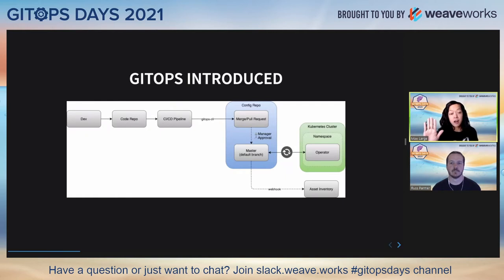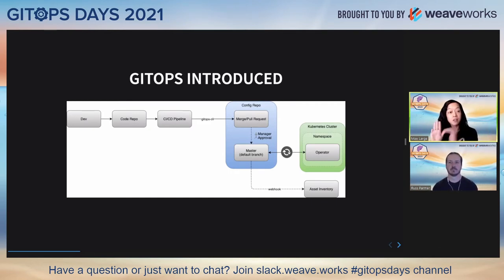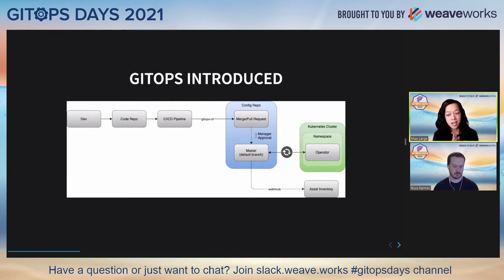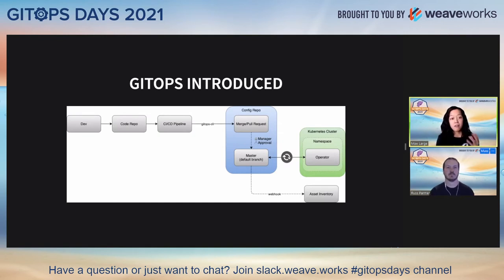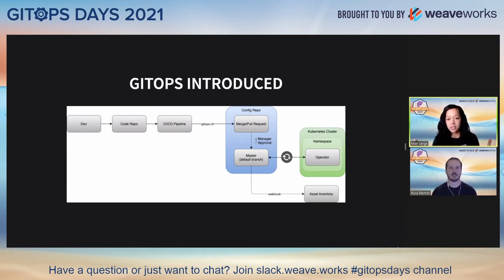The config repo is stood up through automation thanks to Terraform and reinforced again through automation via Terraform. Once you move the pertinent YAML files that describe your target state and that gets approved by the corresponding manager and applied to master, you can expect Flux to realize however you describe your target state into your Kubernetes namespace. We also have a webhook pre-configured in every single one of these config repos to update our asset inventory whenever a production deployment happens. So GitOps back in 2019 is in the house, primarily for application deployments.